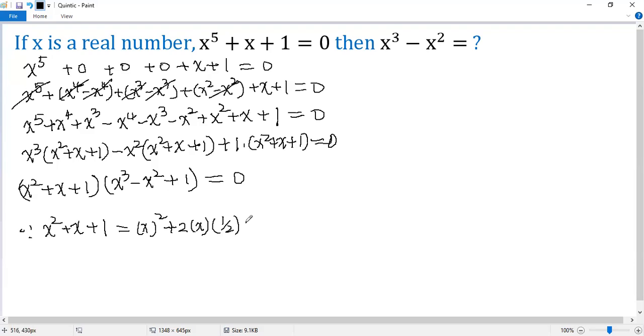Then we need to add b squared, which is 1 over 2 squared. But we need to minus that. Minus 1 over 2 squared. And then we still have 1 there. So the first three terms combined to a perfect square. So we get x plus half squared. Combine the last two terms. 1 minus 1 quarter. So it would be plus 3 over 4.